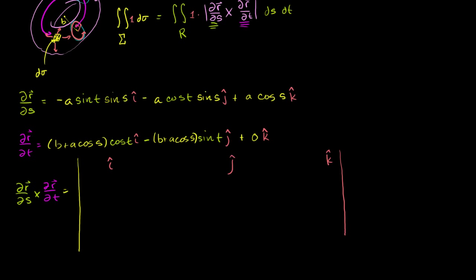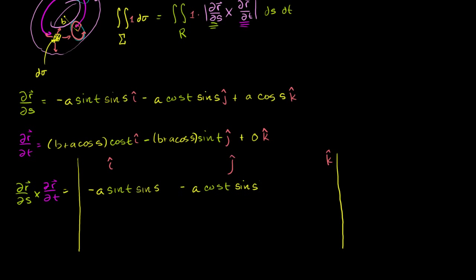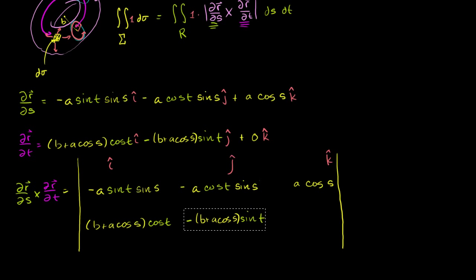The next two rows are going to be the components of these vectors. Let me copy and paste the components of the partial with respect to s into the second row, and the components of the partial with respect to t into the third row. So the cross product of these is literally the determinant of this 3×3 matrix.